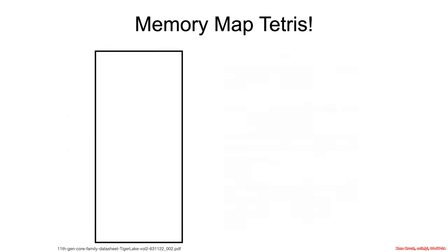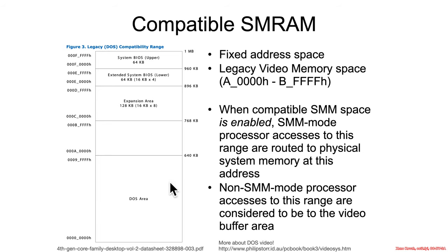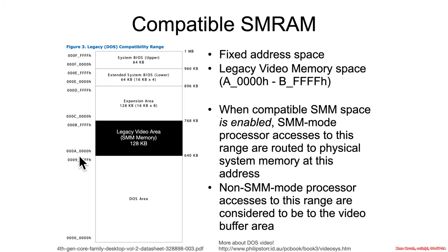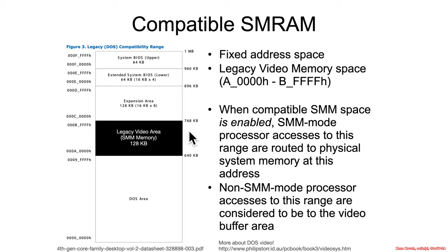From the fourth-generation CPU datasheets, we see that SMM will live at a fixed area starting at physical address 0xA0000 and ending at 0xBFFFF. This is also referred to as the legacy video area — this memory range is reused. If the processor is in SMM it can be used for system management mode code, but if the processor is not in SMM it's used as the legacy or DOS video memory area. For our purposes we're going to think of this A-to-C range as SMRAM.